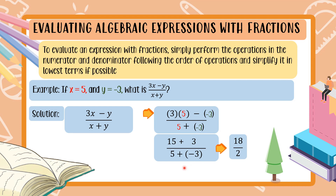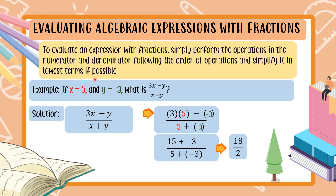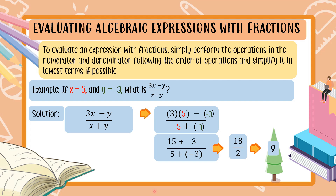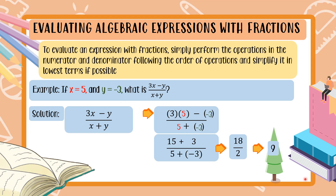Now we have 18 over 2. Since the procedure says to simplify to the lowest term if possible, we reduce it. The lowest term for 18 over 2 is 9. So if x is 5 and y is equal to negative 3, the answer to 3x minus y over x plus y is 9.